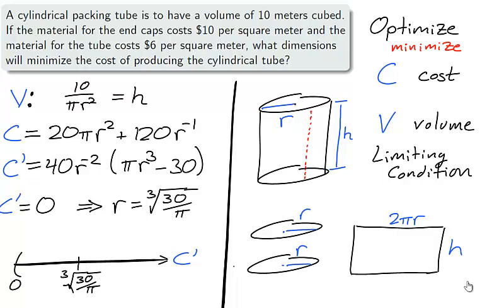We need to determine if the cube root of 30 over π is an absolute minimum for the cost function. Note that there cannot be negative r values, so the number line starts at 0. Taking the test points 1 and 4 for c prime, we'll find that the cost function is decreasing from 0 to the cube root of 30 over π, and increasing after that. Using the first derivative test, this tells us that our value is a local minimum, but as the function was decreasing before and increasing after the cube root of 30 over π, it is an absolute minimum.